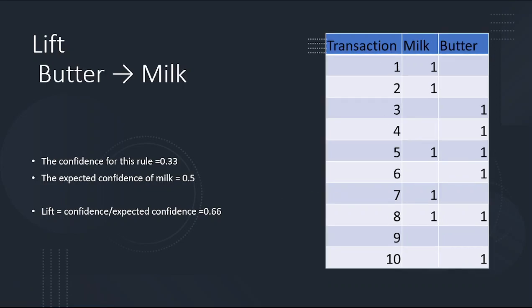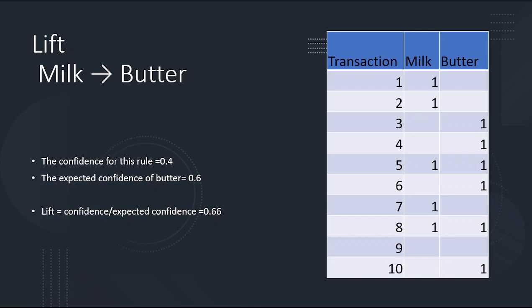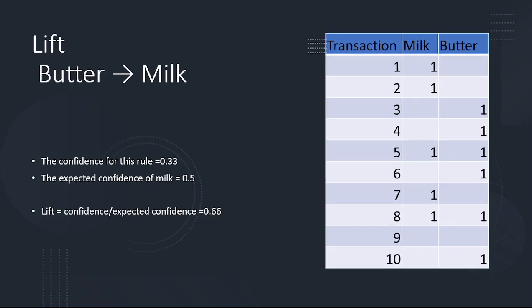If we do it in reverse — butter as antecedent and milk as consequent — the confidence is 0.33, from 2 out of 6. The expected confidence of milk is 5 out of 10, or 0.5. The lift ratio also comes out to 0.66, which was the same as before, confirming that butter and milk are not that strongly associated according to this data.